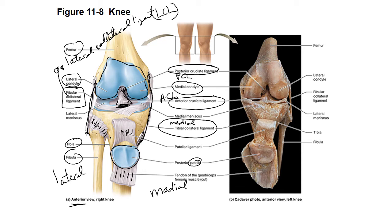We also have some meniscus — these discs that are in here. You can see them going in there. Here's the medial meniscus and here's the lateral meniscus. The meniscus provides extra cushioning for the condyles of the femur, and it also keeps the condyles in place because they're round and can slide around a whole lot on top of that tibial plateau.